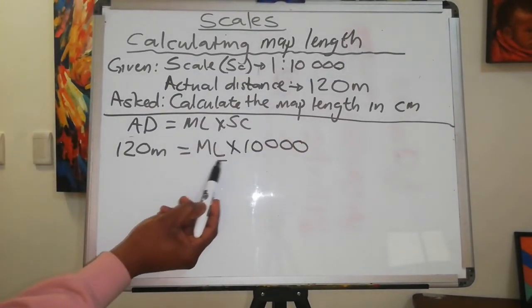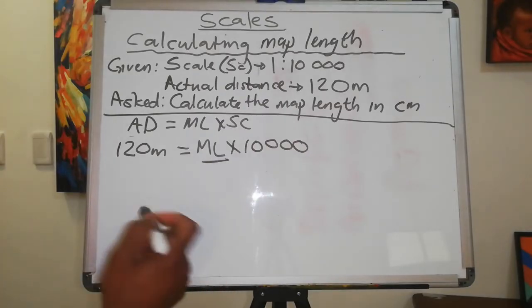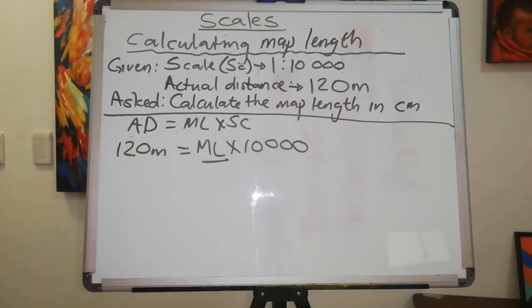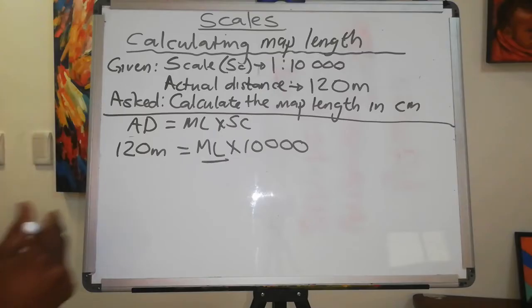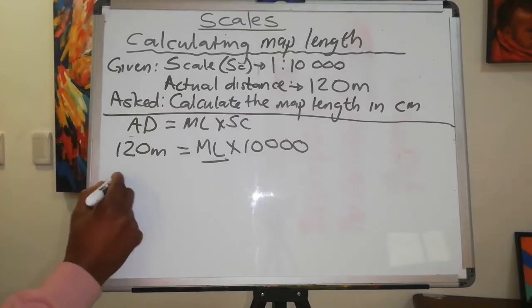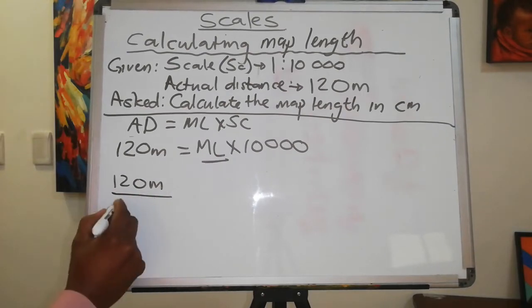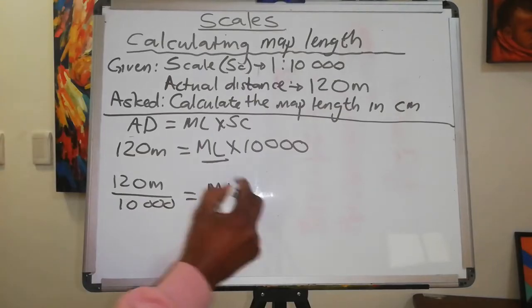We want the map length, so we need to get rid of the 10,000. Therefore, we will divide by 10,000 on both sides. Or, in other words, we carry the 10,000 over to the left-hand side. It's going to give us 120 meters divided by 10,000, and then we are left with only the map length.